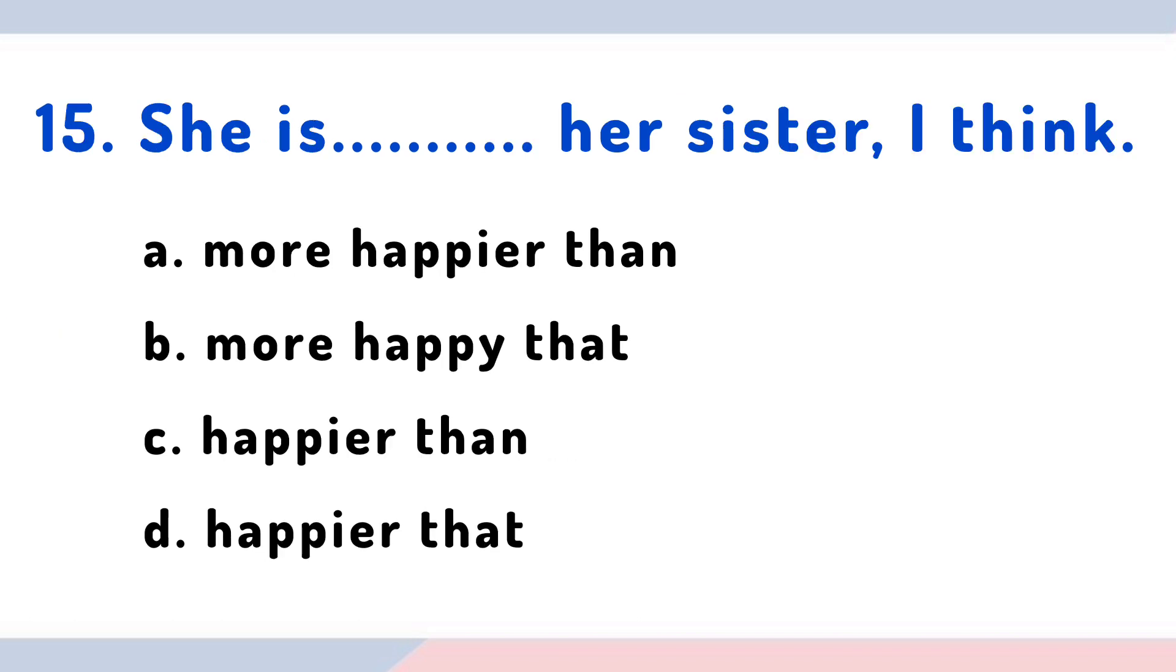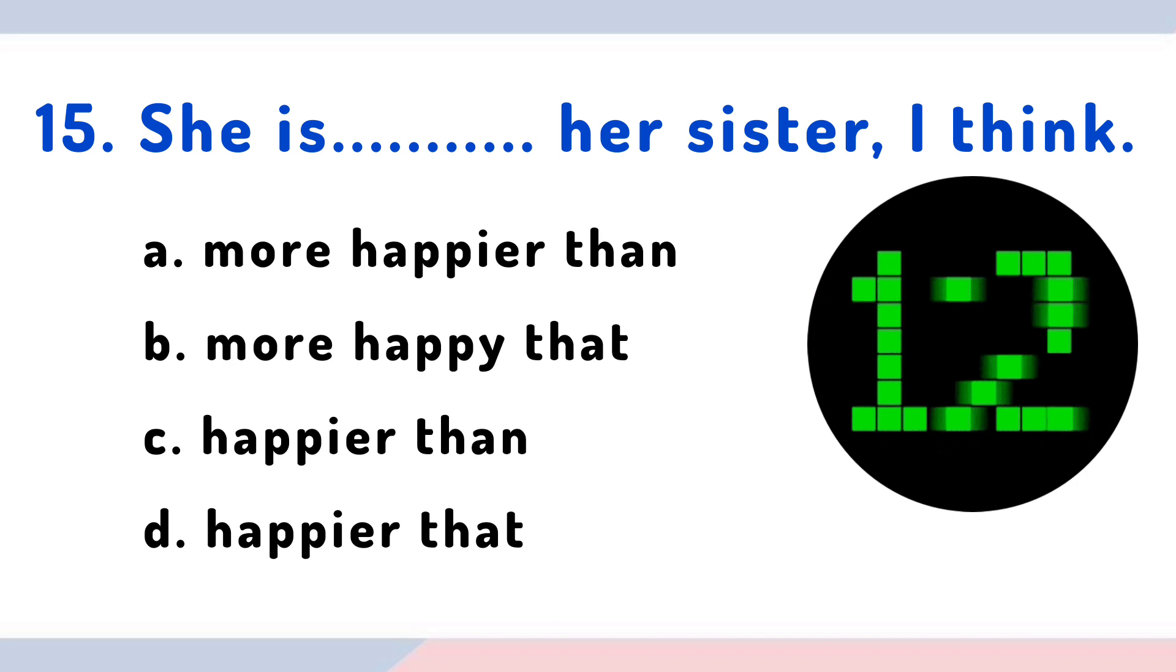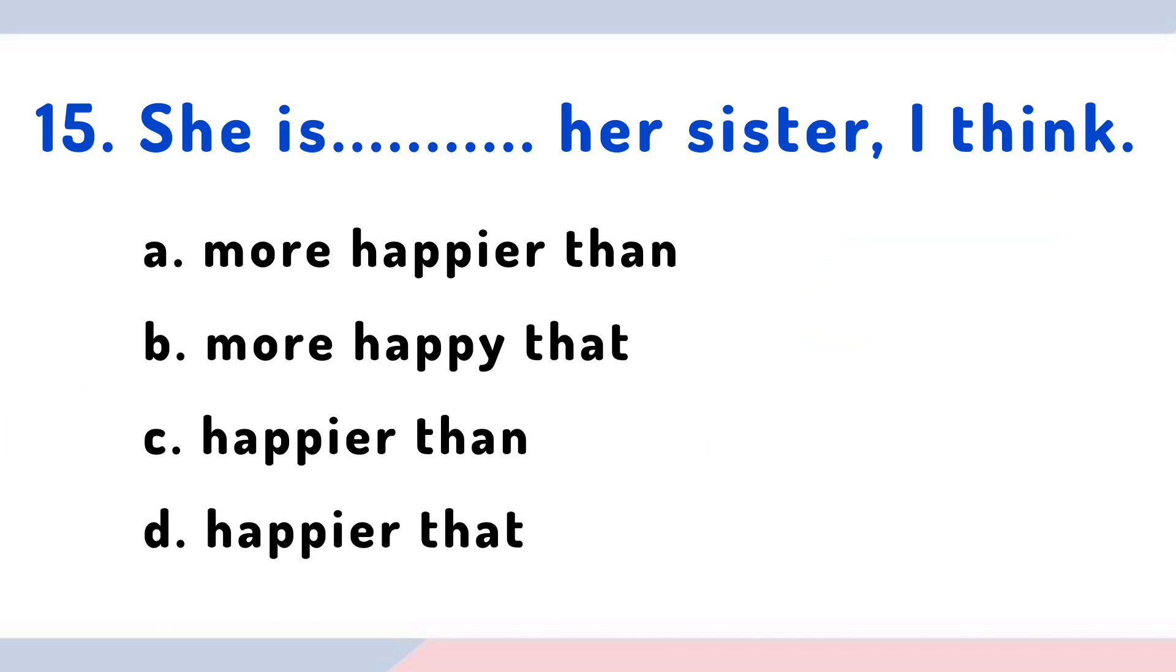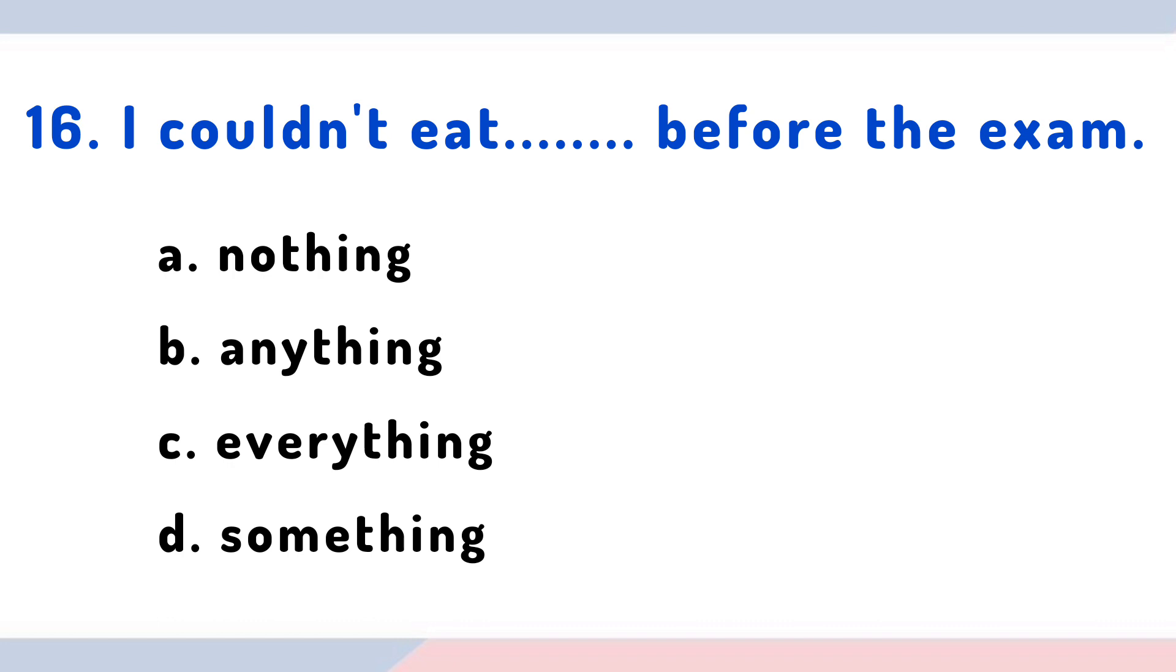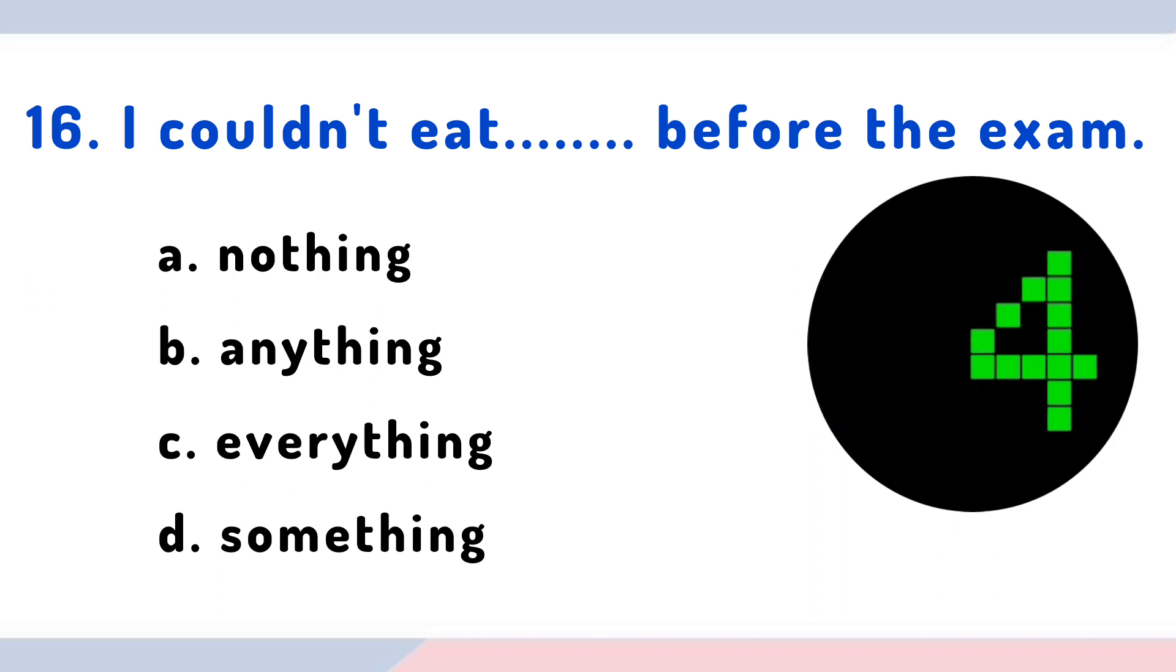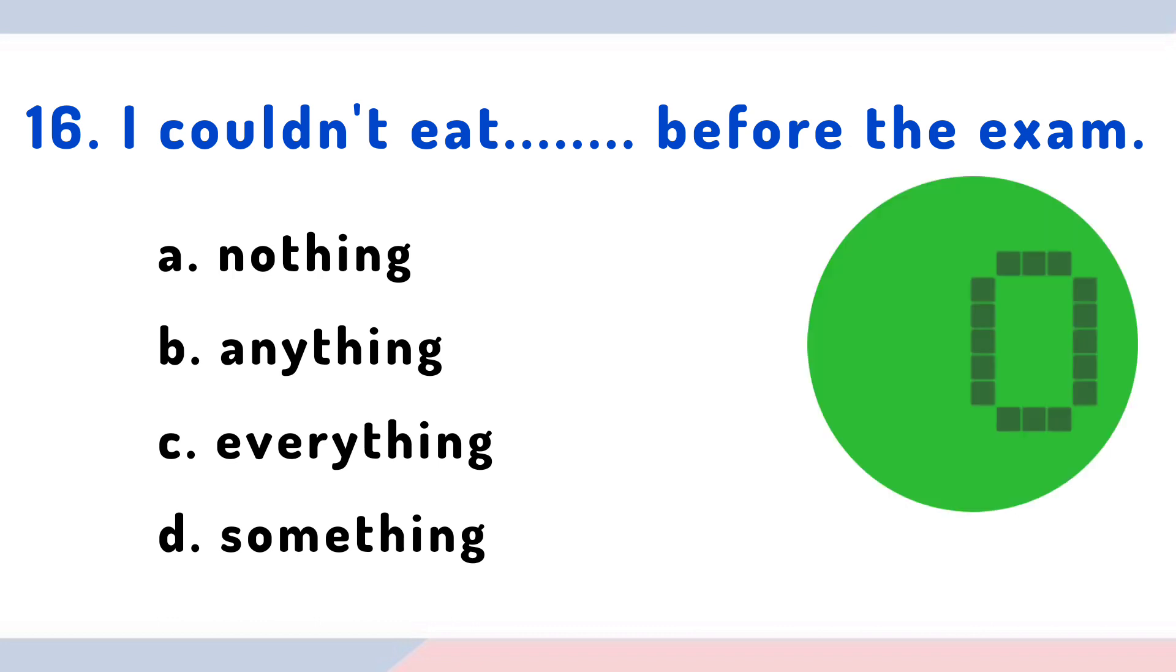Question 15: She is her sister I think. Options: more happier than, more happy than, happier than, happier than. Question 16: I couldn't eat before the exam. Options: nothing, anything, everything, something. The answer is anything.